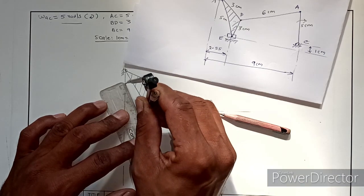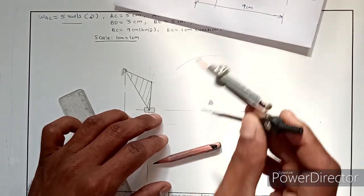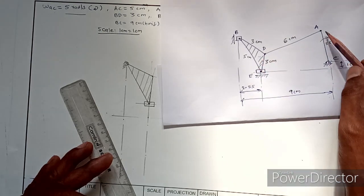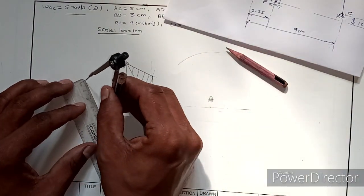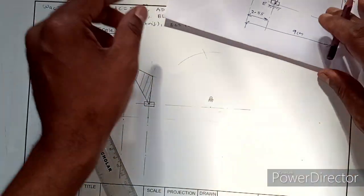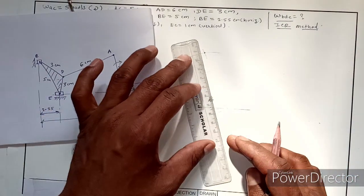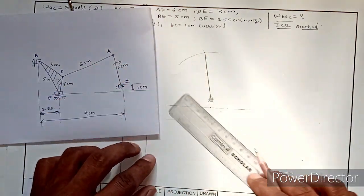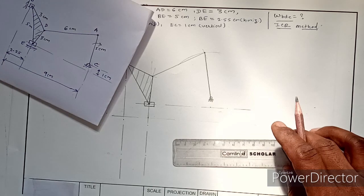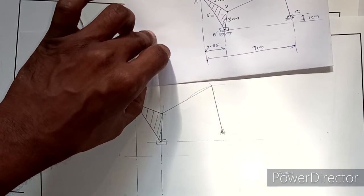I mark an arc for AC equal to 5 centimeters and for AD equal to 6 centimeters, locating point A at their intersection. I join the points, completing the configuration diagram at a 1 to 1 scale.